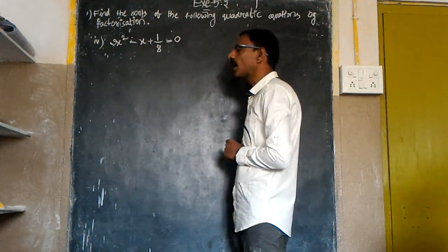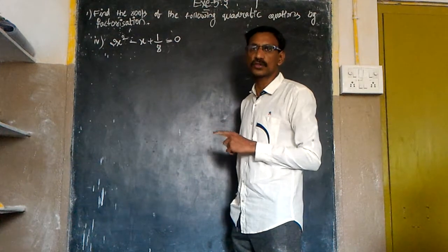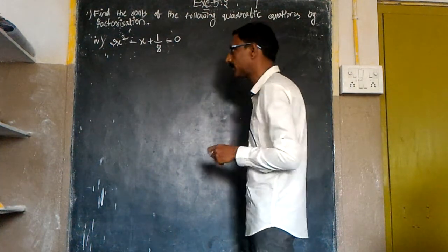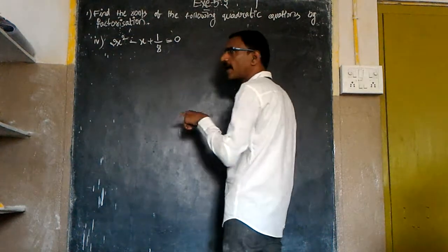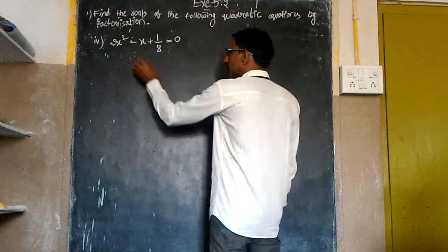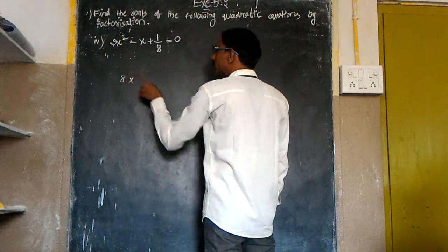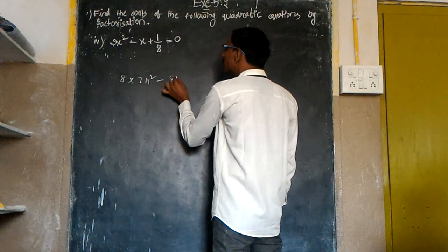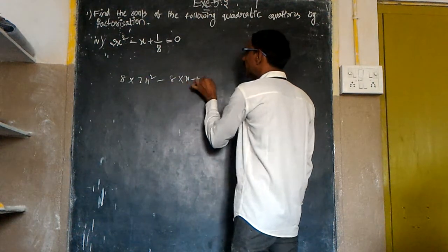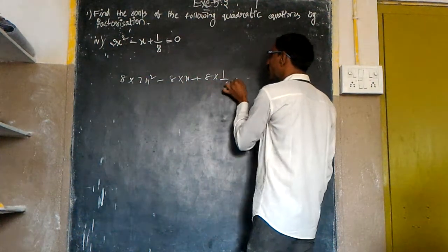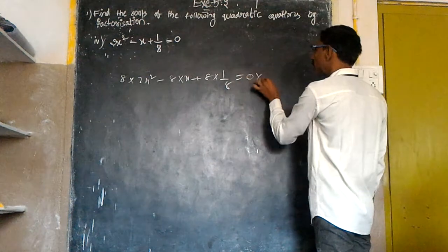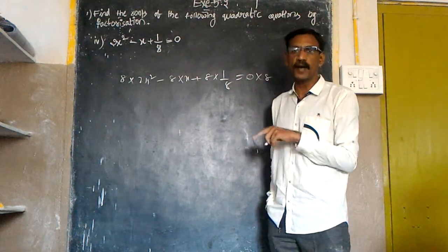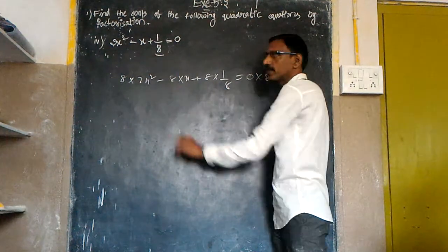So that's the reason I would like to multiply with 8 on both sides to eliminate the 8, to eliminate the denominator 8.